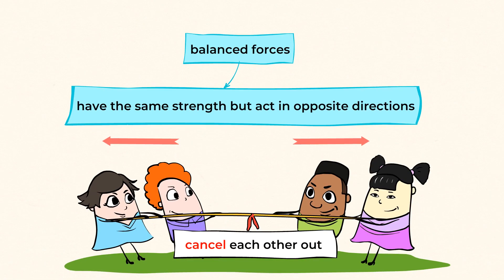When the forces have equal strength and go in opposite directions, they are balanced and cancel each other out. This means that the object will stay at rest if it is at rest before the forces act upon it.